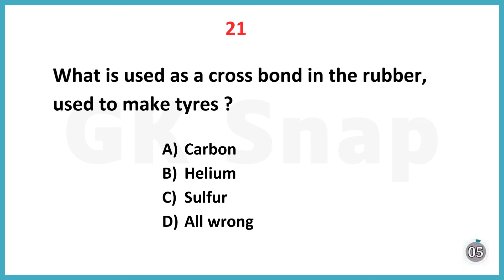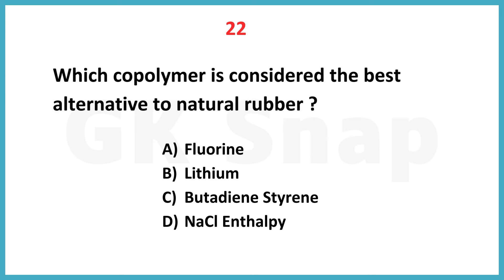What is used as a crossbond in rubber used to make tires? Correct answer is option C: Sulphur. Which copolymer is considered the best alternative to natural rubber?